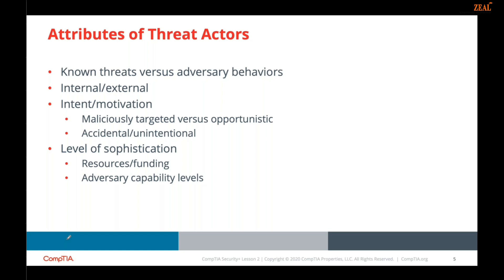Then there is the level of sophistication, which is essentially the capability of the threat actor. Capability is the ability to craft novel exploits, techniques, and tools. The least capable threat actors rely on commodity attack tools widely available on the web or dark web. More capable actors can fashion zero-day exploits in operating systems, applications, or embedded control systems. At the highest level, a threat actor might make use of non-cyber tools such as political or military assets.